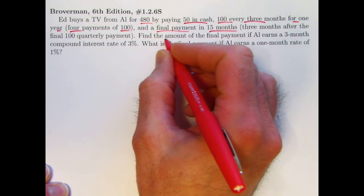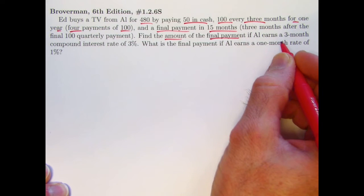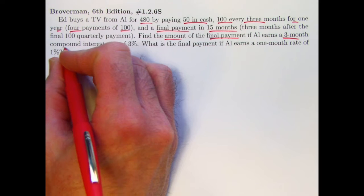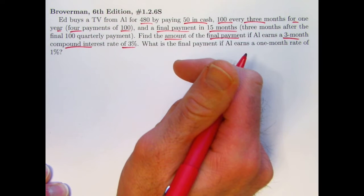We want to find that final payment. What is the amount of the final payment based on Al earning a certain interest rate? It's a three-month compound interest rate of 3%, compounded every three months.